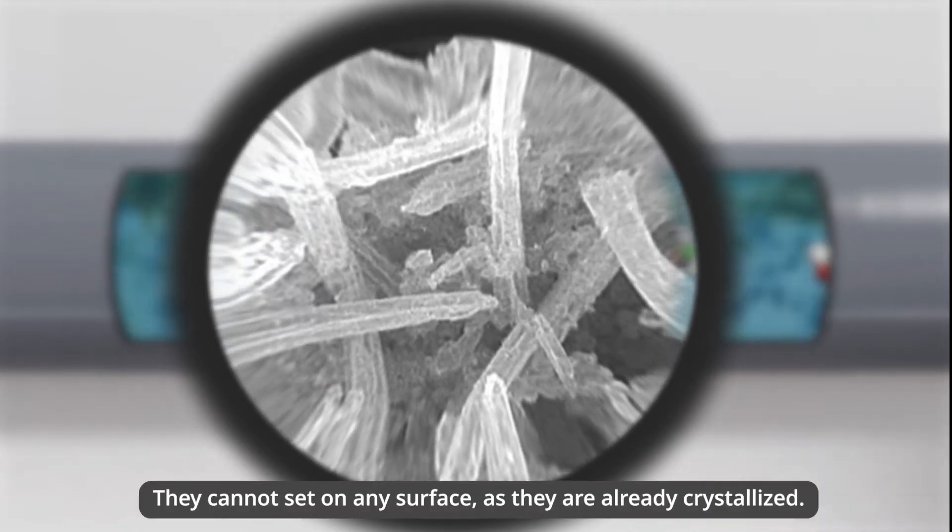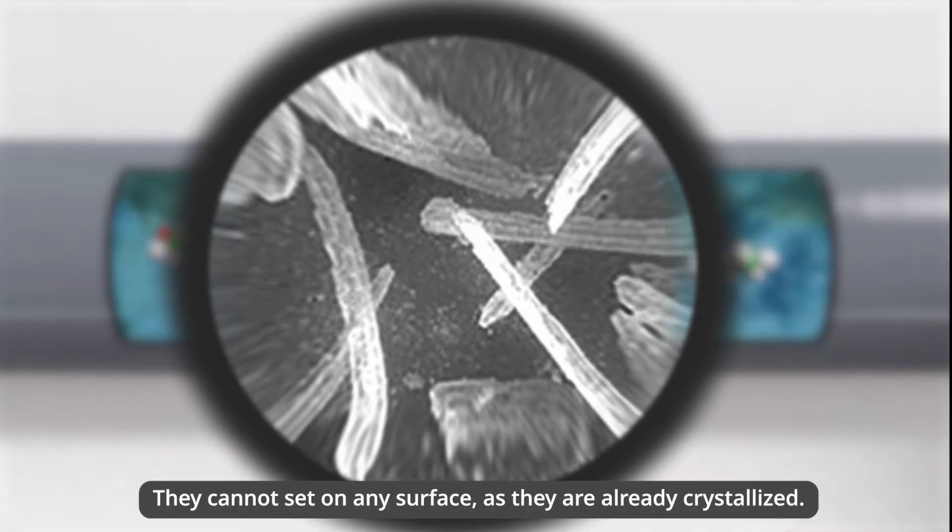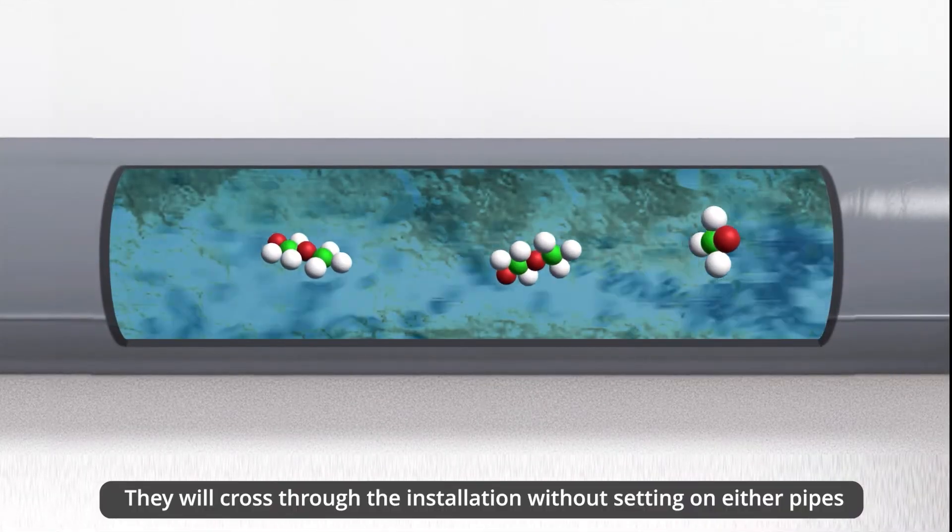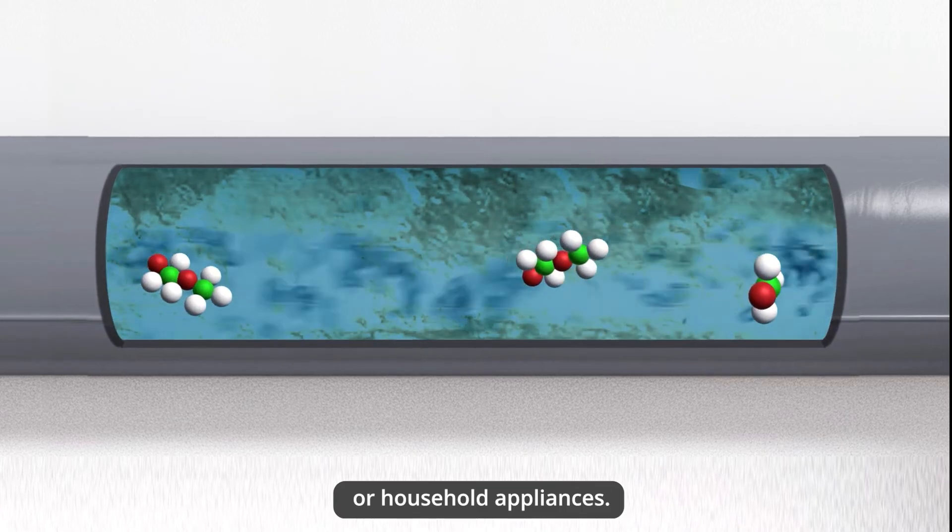They cannot set on any surface as they are already crystallized. They will cross through the installation without setting on either pipes or household appliances.